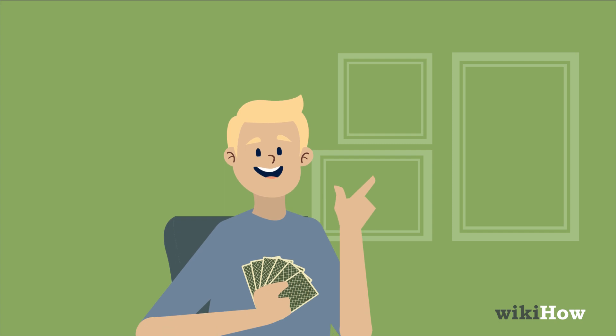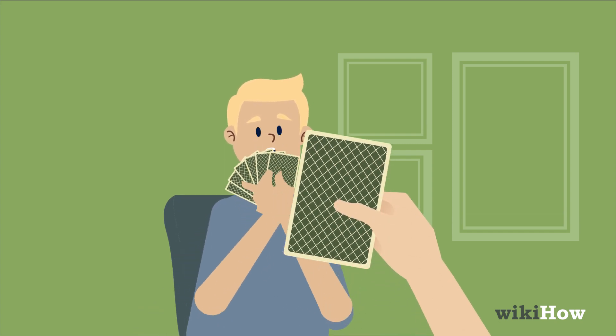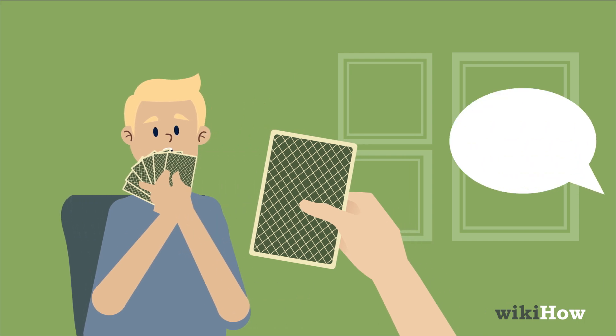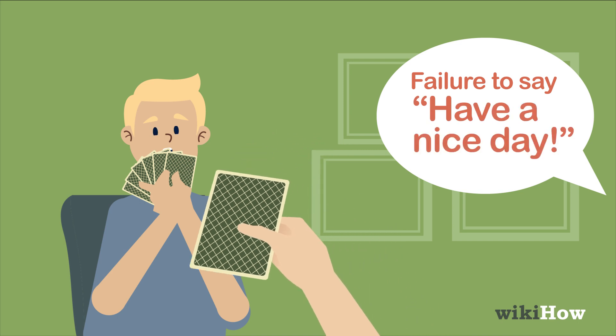If a rule is broken, anybody can award a penalty card by stating what was done to deserve the penalty. For example, somebody might say failure to say have a nice day after awarding a penalty card.